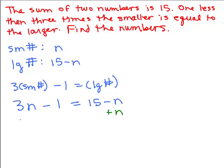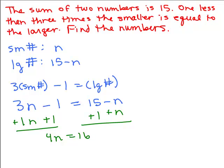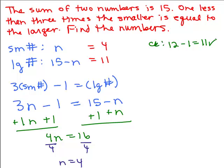Let's add n to both sides — remember, that's the same thing as 1n — and since the variables are going to be on the left, let's also add 1 to both sides so we have the constants on the right. So 4n is 16, which is pretty easy to simplify. Divide both sides by 4, so n is 4. Our numbers are 4, and 15 minus 4 would be 11. The sum of the numbers is 15 — certainly 4 and 11 add up to 15. Also, 1 less than 3 times the smaller: 3 times 4 is 12, and 1 less than that gives me 11, the bigger number. So the numbers are 4 and 11.